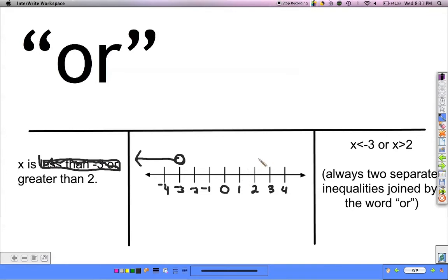So if x is greater than 2, I want to put an open circle because it's just greater than at 2, and I want to draw my arrow to cover numbers that are larger than 2.